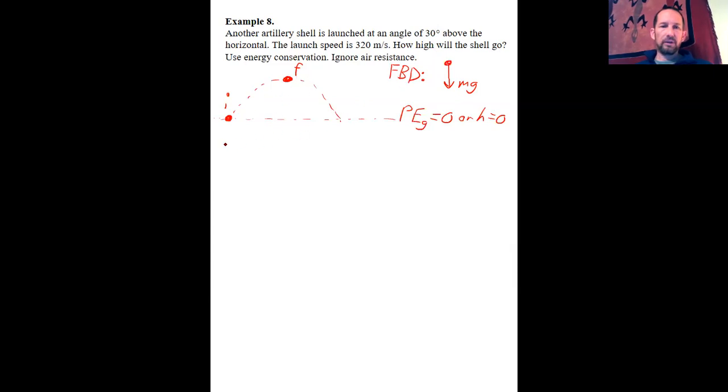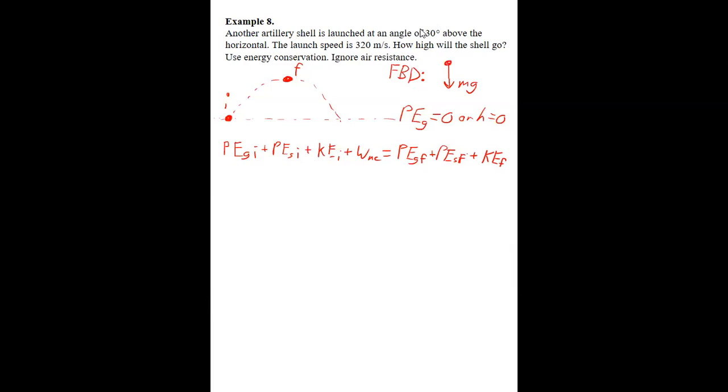So let's see, what else do we need to do? We have our equation: gravitational potential energy initial plus spring potential energy initial plus kinetic energy initial plus the work by non-conservative forces equals gravitational potential energy final, spring potential energy final. This is on your equation sheet. All that's on your equation sheet, and now we can go about thinking about, well, we know there's not any springs here, so we can get rid of the spring terms.